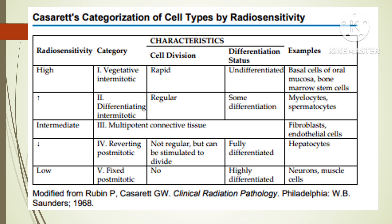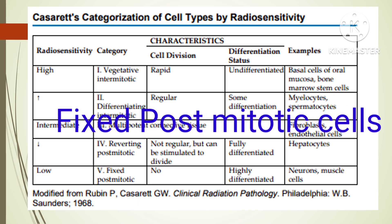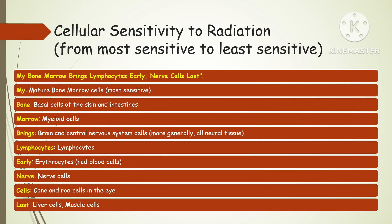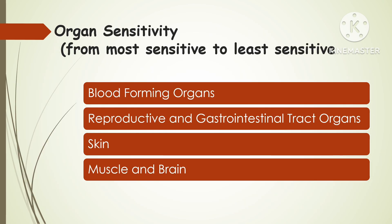The last category is fixed post-mitotic cells. These cells do not divide, are highly differentiated, and are most radioresistant. Examples include neurons in the nervous system, cardiac muscle cells, and mature red blood cells. They are least sensitive to radiations because they do not proliferate and have specialized functions. In the chart showing cellular sensitivity from most to least sensitive, you can remember it with the mnemonic: 'My bone marrow brings lymphocyte early, nerve cell last.' The most sensitive cell is the mature bone marrow cell and the least sensitive is the nerve cell, with muscle cells also among the least sensitive.